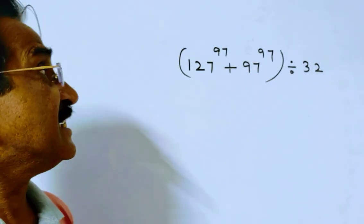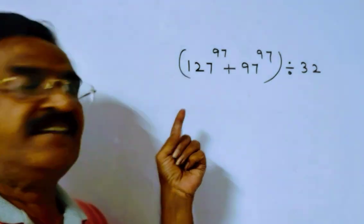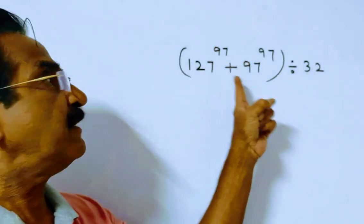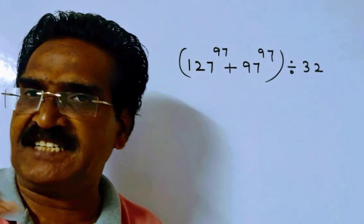Hi friends, good morning friends. What is the remainder when 127 power 97 plus 97 power 97 is divided by 32?